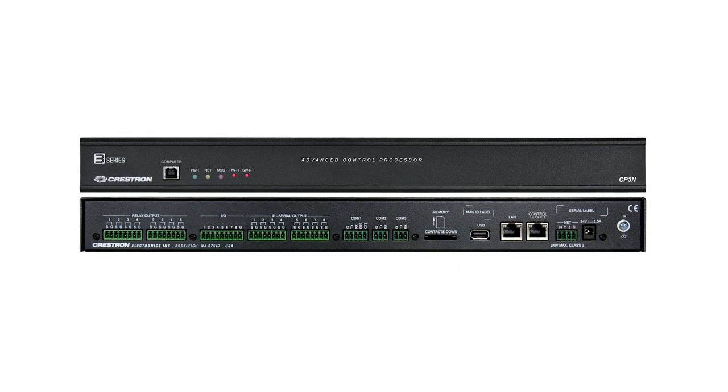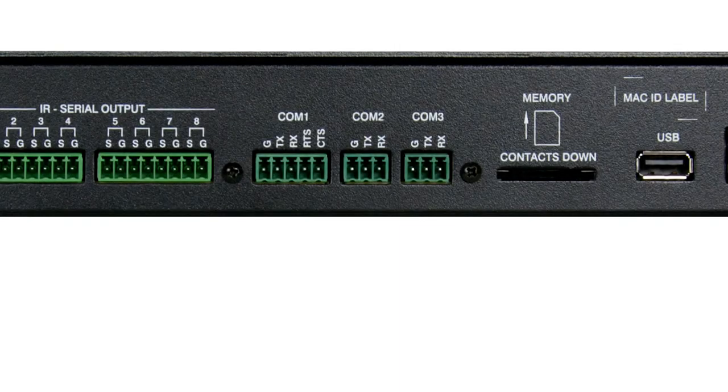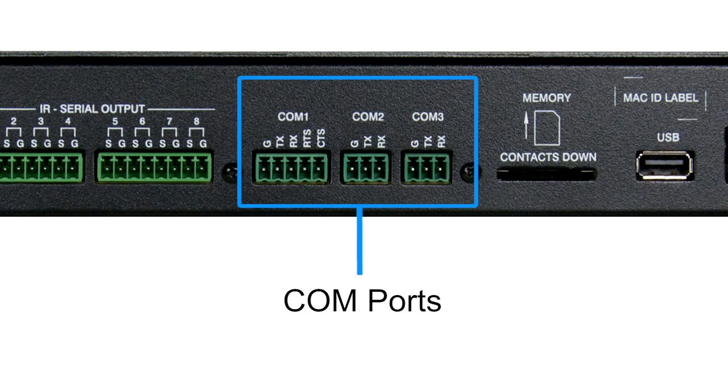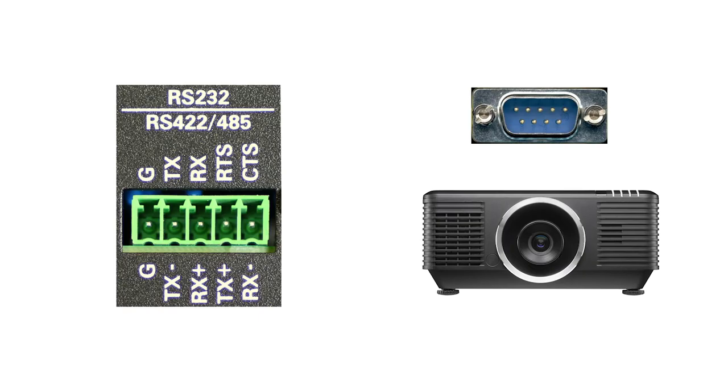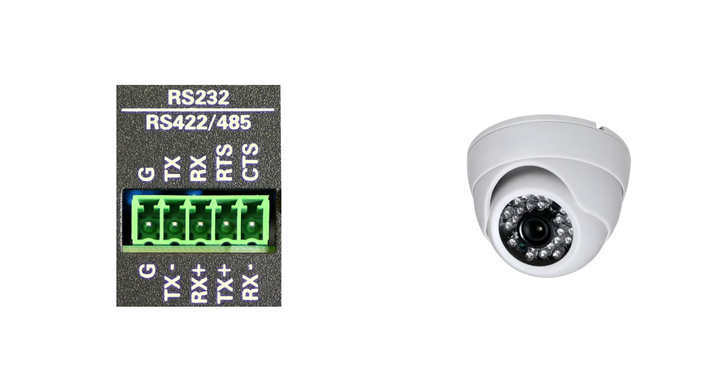Shown here is the CP3 control processor. Here are the communication ports, commonly called COM ports — three are available on this processor. Serial communication can be bi-directional, meaning that a control processor could send a command to a device and then receive a response from that device, providing real-time feedback. Some COM ports can support different protocols. RS-232 is the most common protocol, and any device with a COM port supports it. Some ports also support the RS-422 standard.